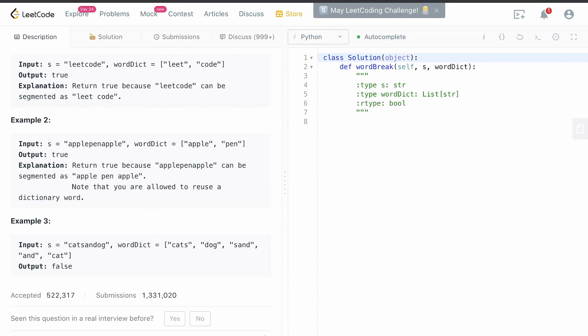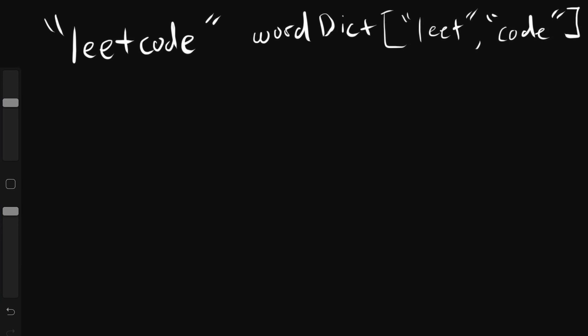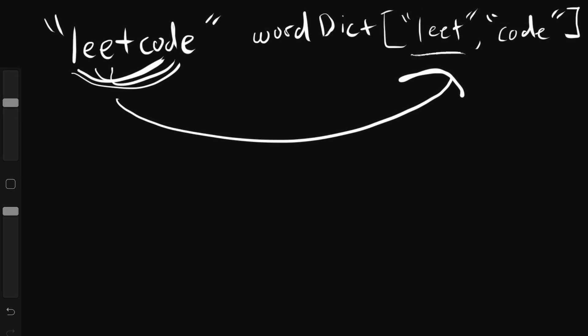As mentioned earlier, this is a dynamic programming problem. We're first going to look at a brute force approach and why it's not optimal, and then we'll optimize it with dynamic programming. The brute force approach uses recursion or backtracking to check every possible prefix of the string against our dictionary of words. If we find a match, the recursive function is called for the remaining portion of that string, continuing until the complete string is found in the dictionary.